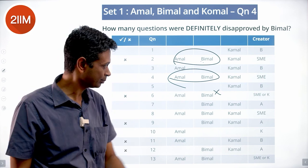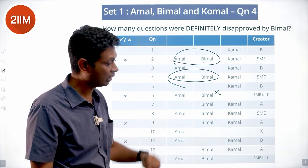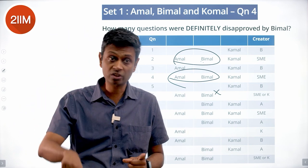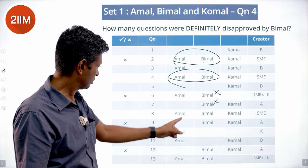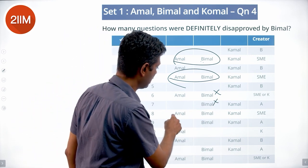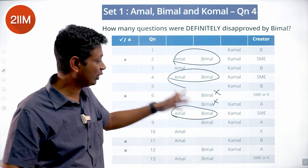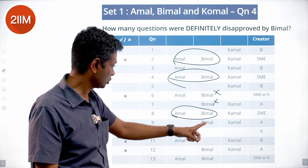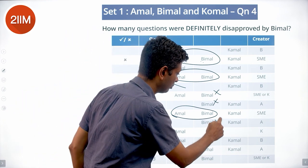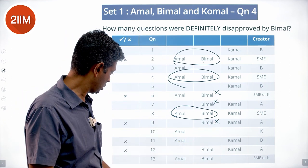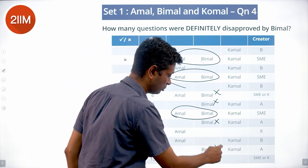Q7 was created by Amal and reviewed by Bimal — Bimal rejects it, which sends it to Komal. So Bimal definitely rejected Q7. For Q8, again Amal and Bimal with a split sending it to Komal — we're not sure which one rejected. For Q9, reviewed by Bimal and Komal, created by Amal — Bimal rejected it and so did Komal. Bimal definitely rejected Q9. Q11, reviewed by Bimal and Komal, created by Amal and rejected — both rejected it, so Bimal definitely rejected Q11.